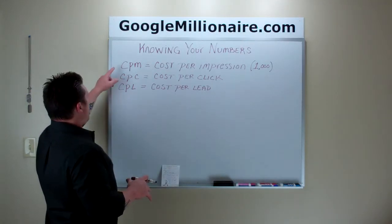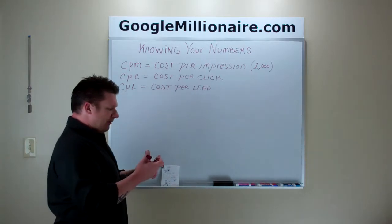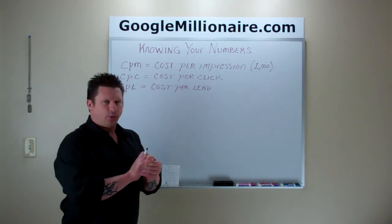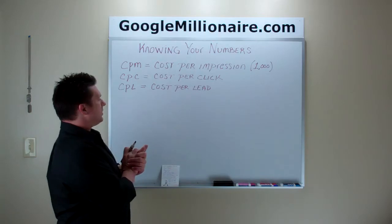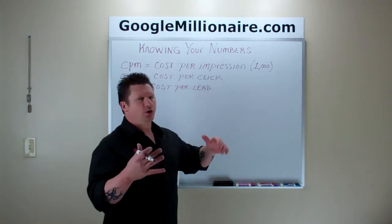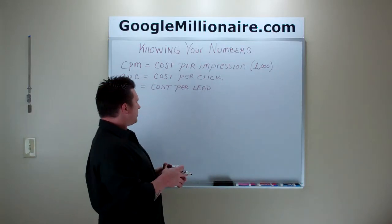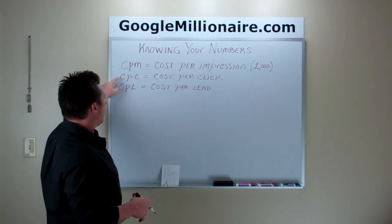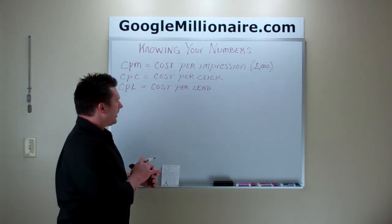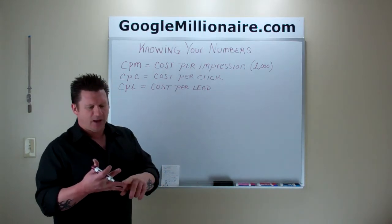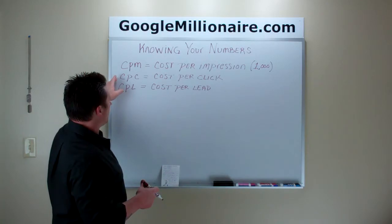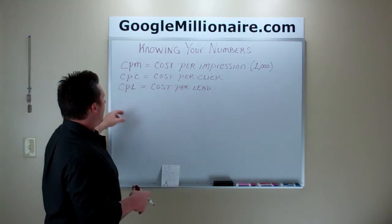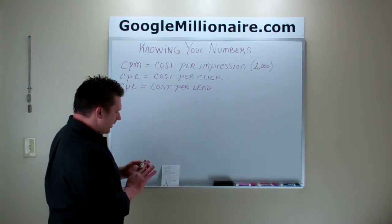We're going to go over a couple of terms right here. CPM — if you haven't heard this before, a lot of you that do Facebook and Bing advertising know what this is. It's cost per impression, and what you're doing is you're buying a thousand impressions. What is your cost for every 1,000 impressions? That's what CPM stands for. Then we have CPC — cost per click — how much you're paying for clicks from Facebook, Bing, solo ad vendors, different traffic sources. And then we've got cost per lead.